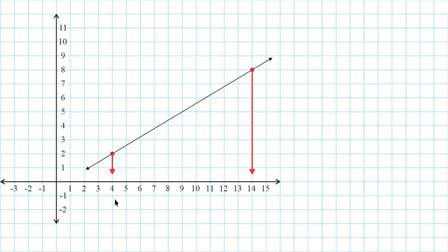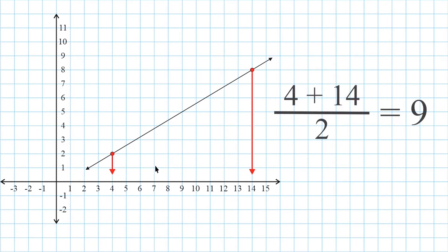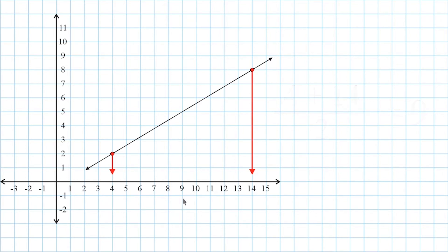Now to find the middle of any two values, all you have to do is take those two values, add them together, and then divide by 2. So if we take 4 and 14 and add them, we get 18, and 18 divided by 2 is equal to 9. So 9 is directly in the middle of 4 and 14.